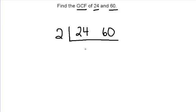24 divided by 2 is 12, and 60 divided by 2 is 30. All right, I think there's still more common factors, so let's take a look.